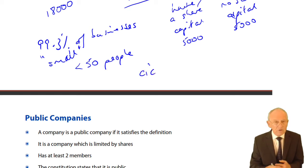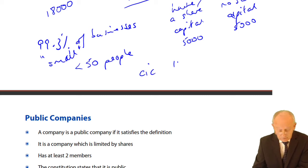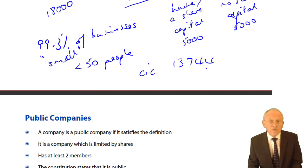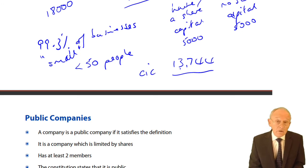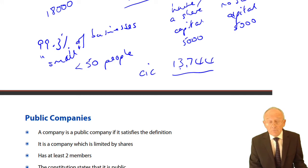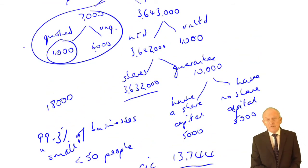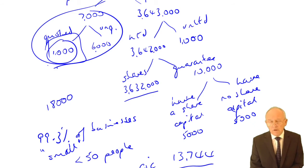With reference to CICs — the community interest companies — started in 2004, we're looking now in 2017, 13 years on, and there are approximately 13,744 community interest companies as at September 2015. That's a growth of around 1,000 per year — roughly 20 per week being registered as community interest companies. Meanwhile, these 7,000 public companies — principally the 1,000 quoted ones — account for greater than 90% of business conducted in the UK.